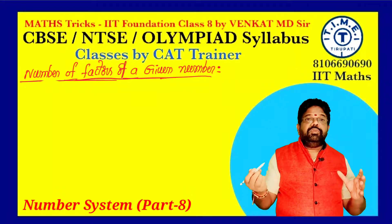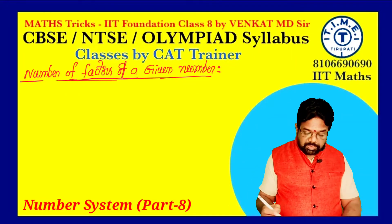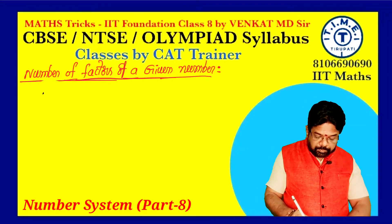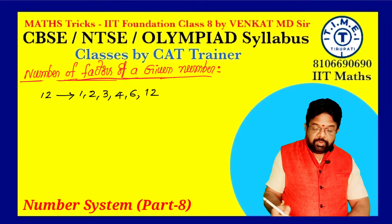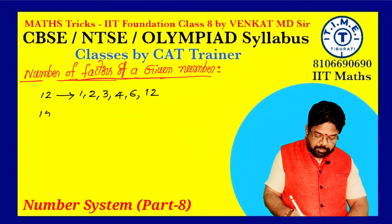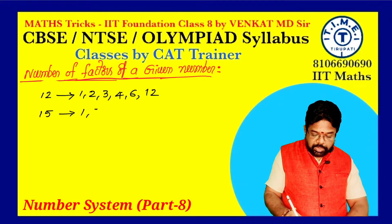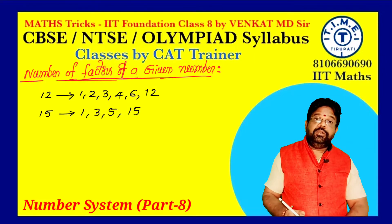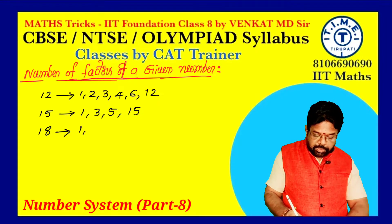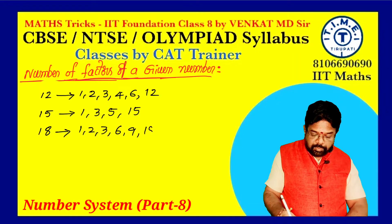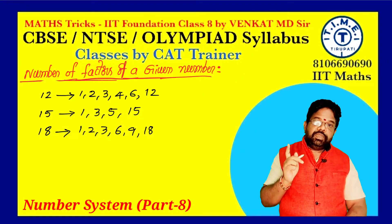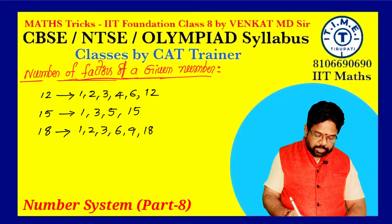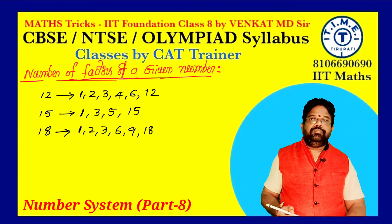First I will discuss the concept and nature of factors. Suppose let it be 12 — 12 is divisible by 1, 2, 3, 4, 6, and 12, so 6 factors. Let it be 15 — divisible by 1, 3, 5, and 15. What are the factors of 18? Divisible by 1, 2, 3, 6, 9, and 18. By observing the nature of the factors, for each and every number the first factor is 1.